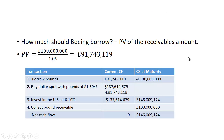The first question is: how much should Boeing borrow? What they want to do is borrow the present value of the receivables amount. The receivables are 100 million pounds and the UK interest rate is 9%, so the present value would be 91,743,119 pounds.